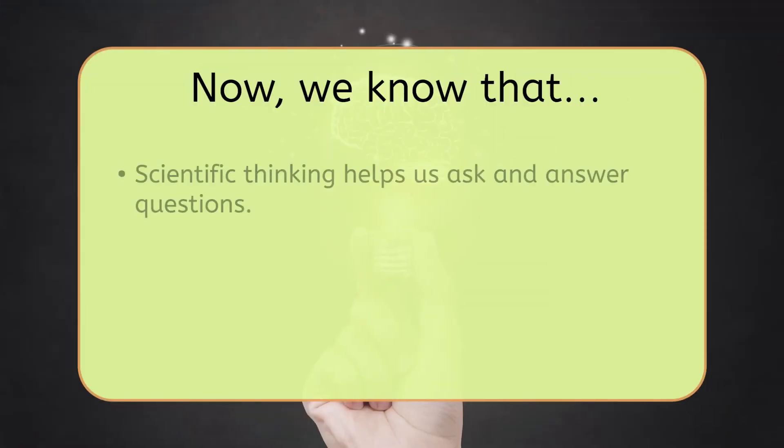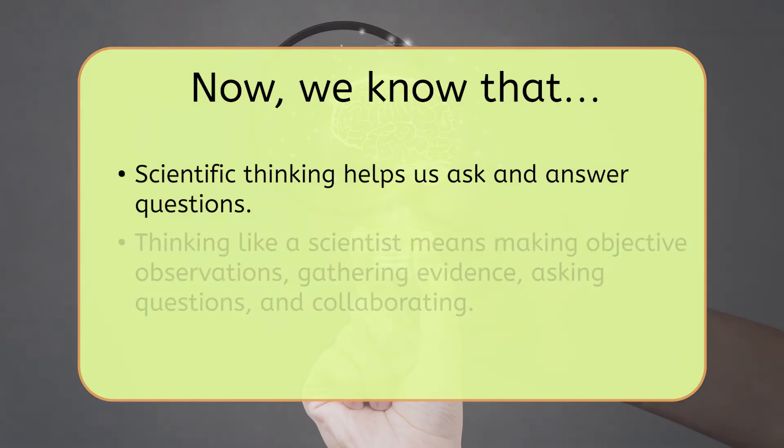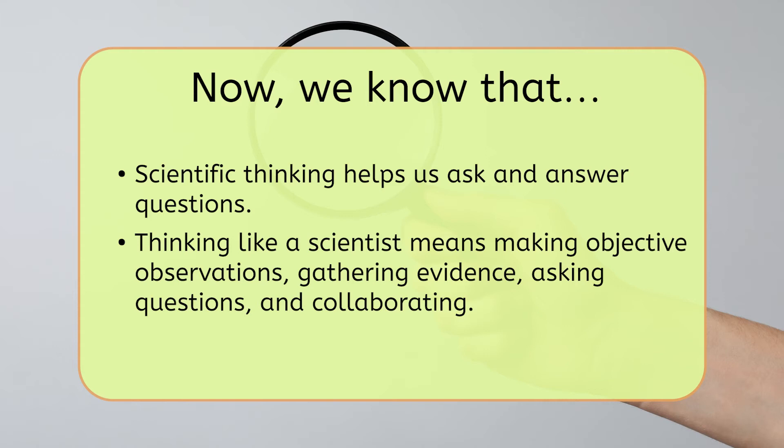We now know that scientific thinking helps us ask and answer all sorts of questions. And that thinking like a scientist means making objective observations, gathering evidence, asking questions, and collaborating with other experts. And that means that you and I can think like a scientist too. By focusing on the facts, using our five senses, and working together, we can start discovering the answers to the world's mysteries. In fact, the questions and extension activities that go with this lesson will help you practice thinking like a scientist. Be sure to check those out to help sharpen your scientific mind.